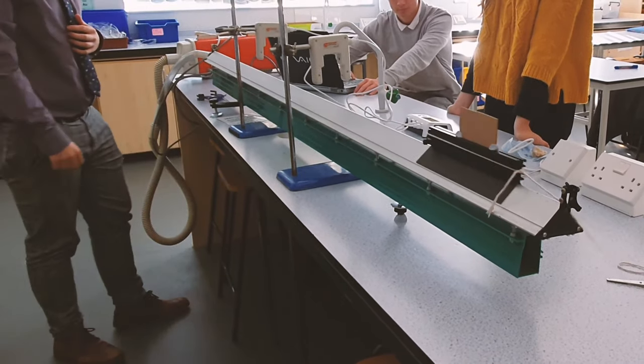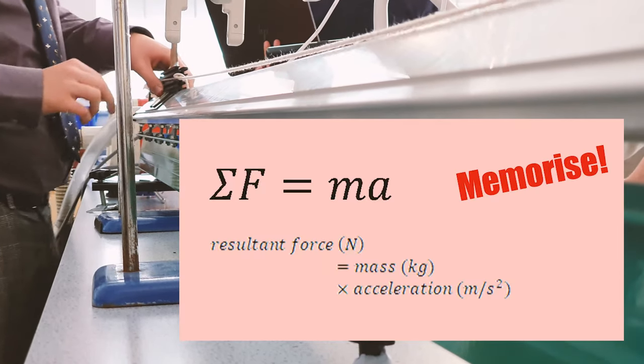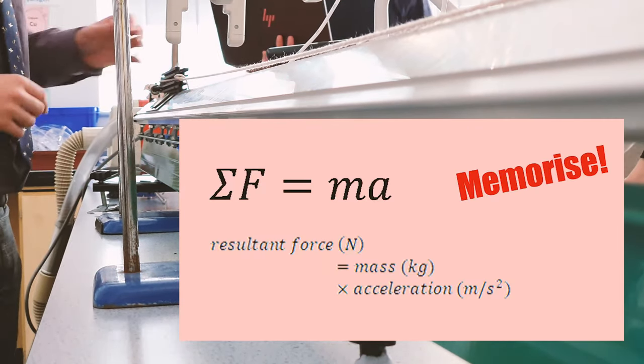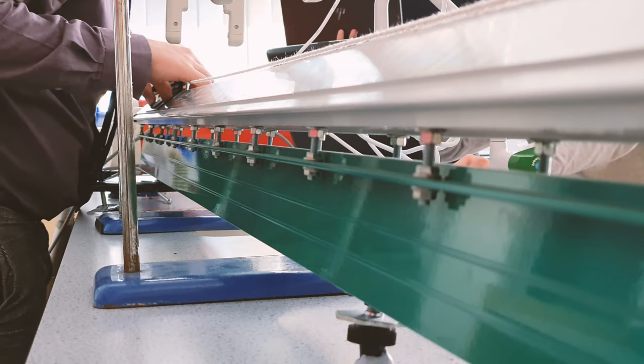So a light gate works by just measuring the time which the beam is broken. Newton's second law is that the resultant force is proportional to the mass times acceleration. So we need to measure acceleration and we need to measure a resultant force.